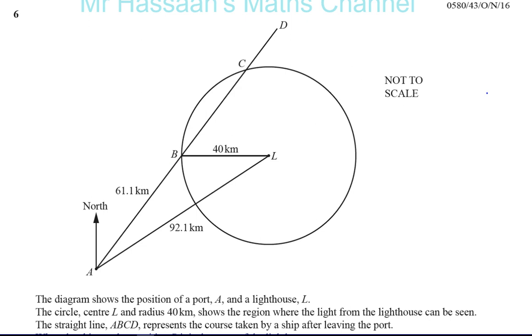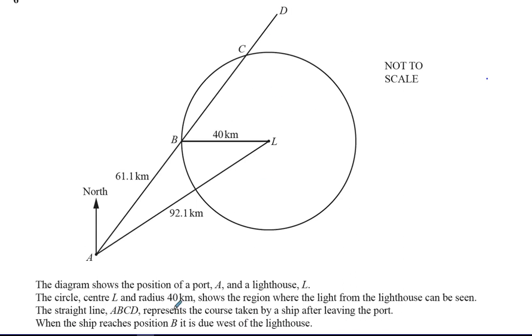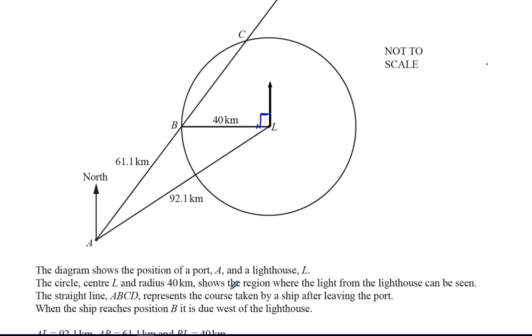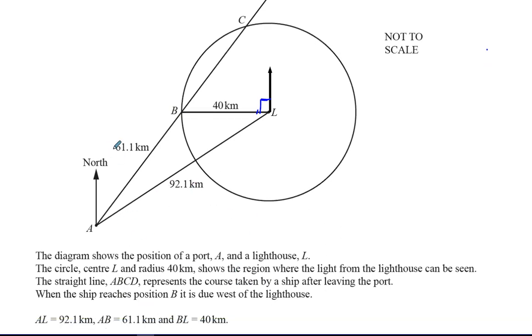Anything that's within this circle can see the light. Anything outside the circle cannot see the light. The straight line ABCD represents the course taken by a ship after leaving the port A. So this is the course that the ship is going on. It's traveling along this path. When the ship reaches position B, it is due west of the lighthouse. Due west means that the bearing is 270 degrees. That means this angle is 90 degrees here. AL equals 92.1 km, AB equals 61.1 km, and BL is equal to 40 kilometers, which is also marked.